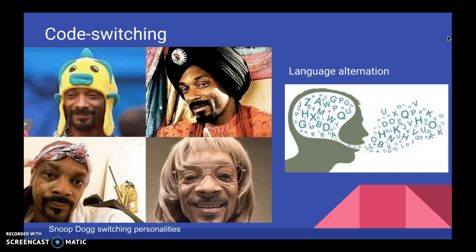Code switching. In linguistics, code switching, or language alternation as it is also called, occurs when a speaker alternates between two or more languages, or language varieties, in the context of a single conversation. Code switching is often also a switch in not only use of language, but also attitude, and even one's whole personality.